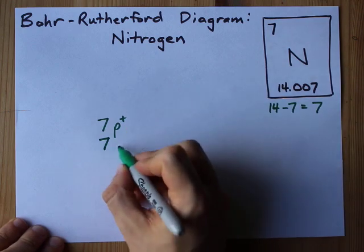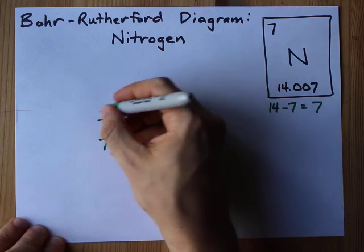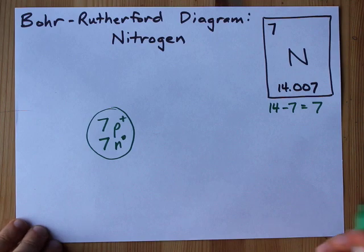I'm going to write down that I have the seven protons, I'm going to write down that I have the seven neutrons and those all go into the nucleus of my atom.